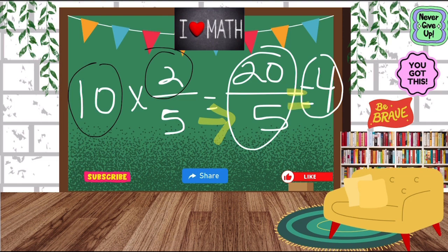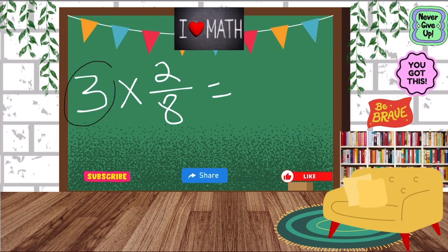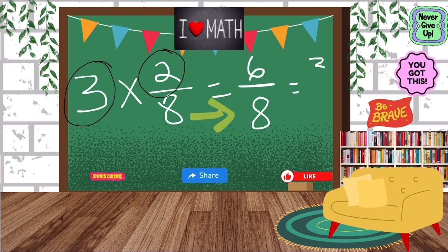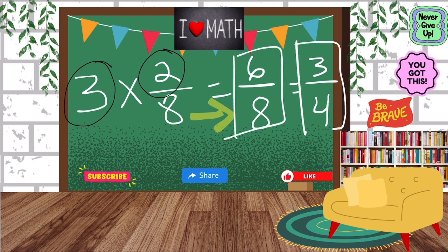So now we have 3 times 2/8. We take our whole number and multiply it by the numerator. 3 times 2 is 6. Bring our denominator over which is 8. It is 6/8. And we can see that 6/8 can be simplified. I do have a video on how to simplify fractions and that will equal to 3/4. Go check that video out as well, okay?